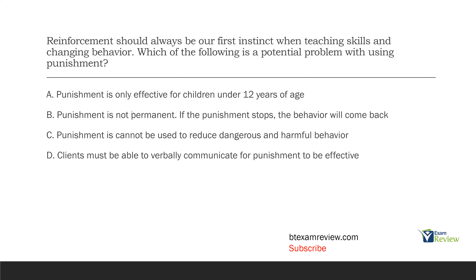Answer A: punishment is only effective for children under 12 years of age. We know age only says so much, especially for some of the populations we work with. Age really isn't an indicator of all that much, so saying a procedure like punishment would only work for children under 12 is false. Answer B: punishment is not permanent — if the punishment stops, the behavior will come back. This is a problem. Why is punishment not permanent? Because punishment doesn't teach a replacement behavior. That's why punishment is always used in conjunction with something else. If we're punishing a behavior and never teach a different behavior, if the punishment ever stops, that behavior is very likely to come back.